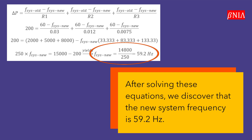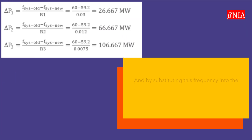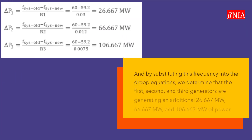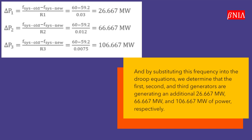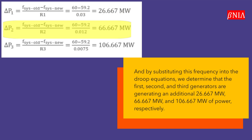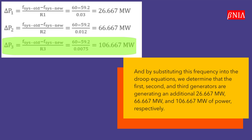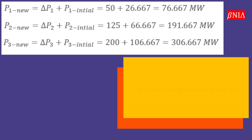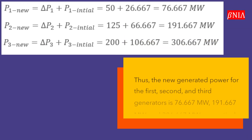By substituting this frequency into the droop equations, we determine that the first, second, and third generators are generating an additional 26.667 megawatts, 66.667 megawatts, and 106.667 megawatts of power respectively.